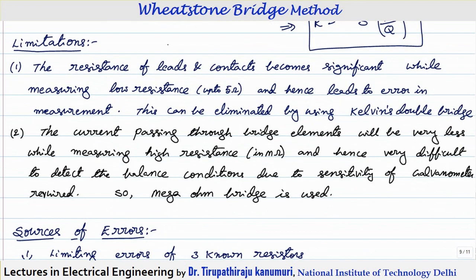There are some limitations of this bridge. The resistance of the leads and contacts becomes significant because whenever you connect resistances at junctions, the leads have resistance, and joining two conductors introduces contact resistance. This becomes significant particularly when measuring low resistances — for example, contact and lead resistance of around 0.1 ohms is very significant compared to a 1 or 2 ohm measurement, introducing significant errors for resistances up to about 5 ohms. To eliminate this we go for the Kelvin double bridge, which was discussed in measurement of low resistance in previous topics.